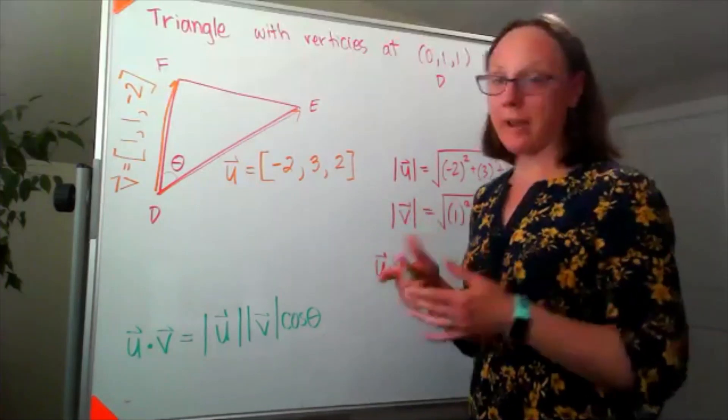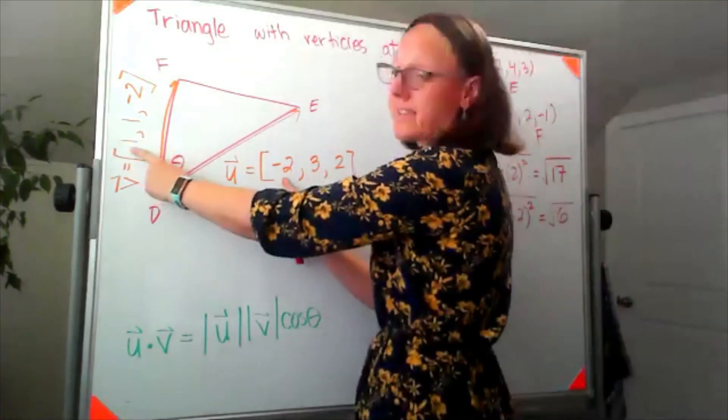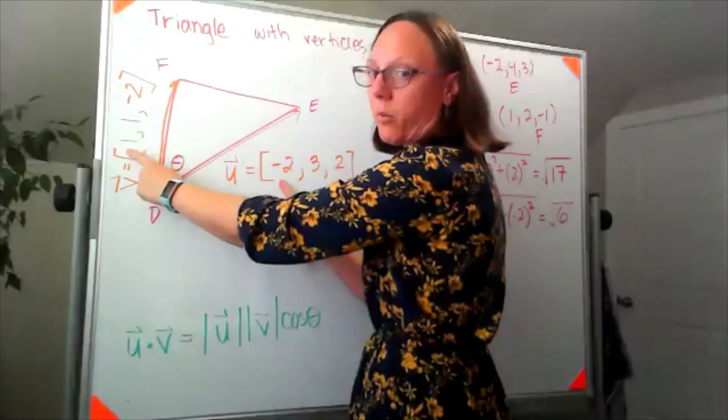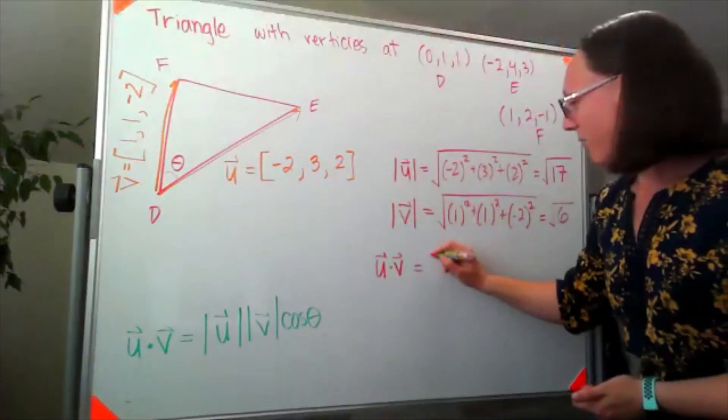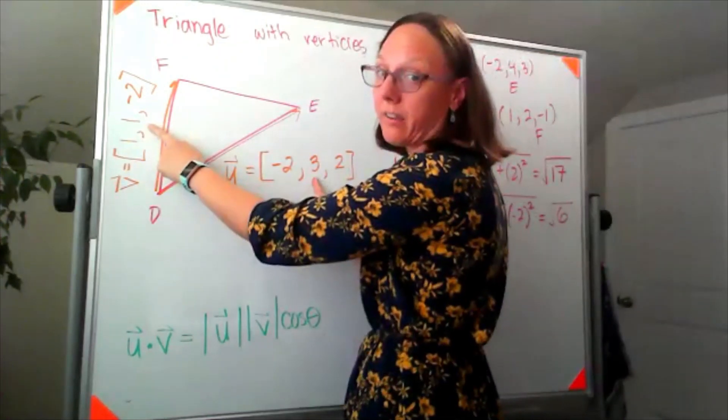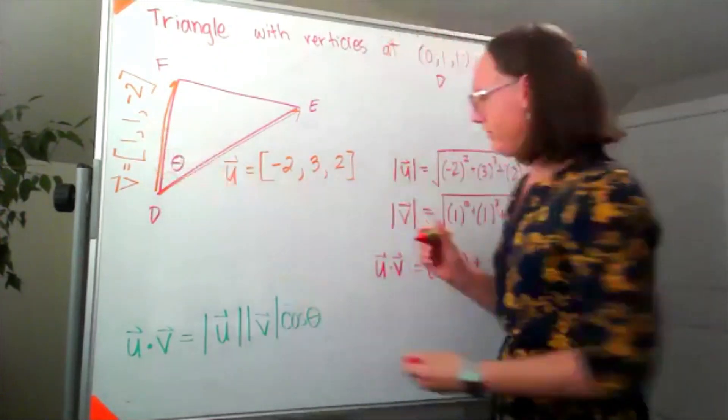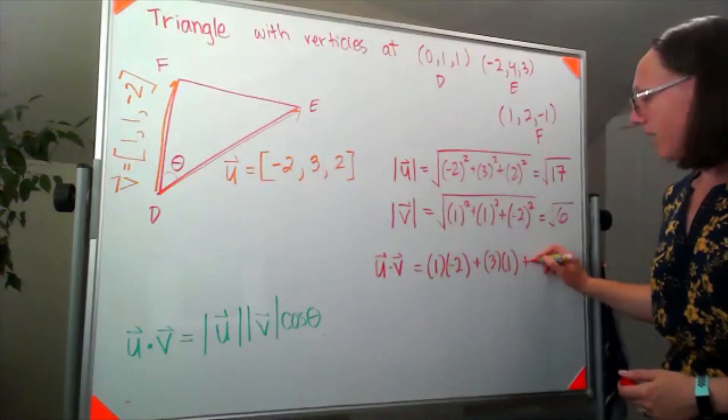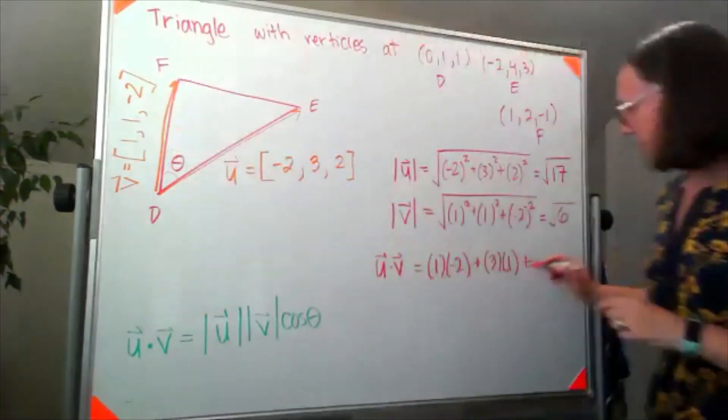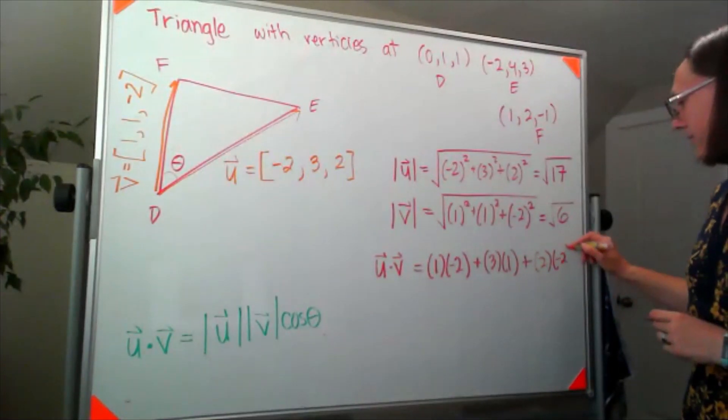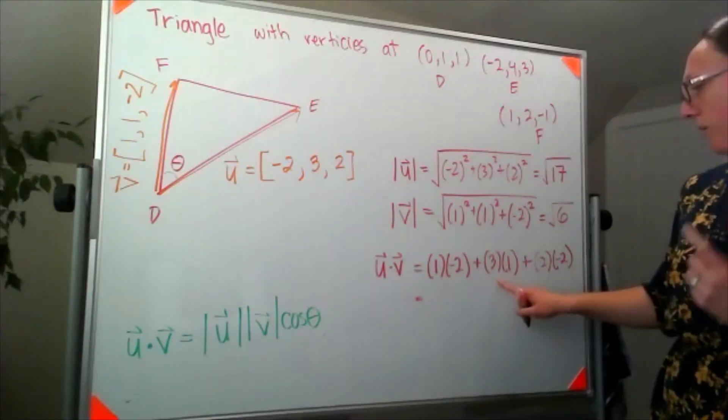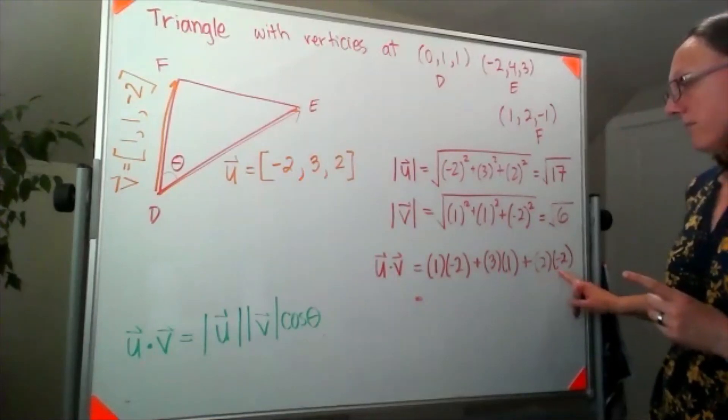So what I mean by multiply them pairwise is I'm going to take my two x components or i components, multiply those together. So one times negative two. So I have one times negative two, and then I'm going to add that to multiplying my two j hat or y components together. Three times one. And last I need my two k or z components, two times negative two. And overall that should give me a value of negative two plus three, so I'm at positive one minus four, so negative three.